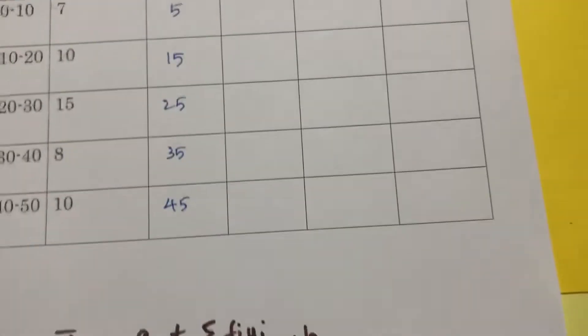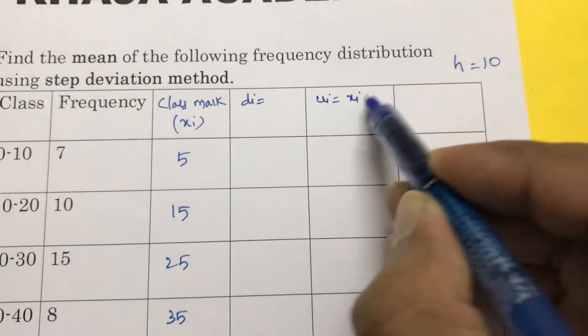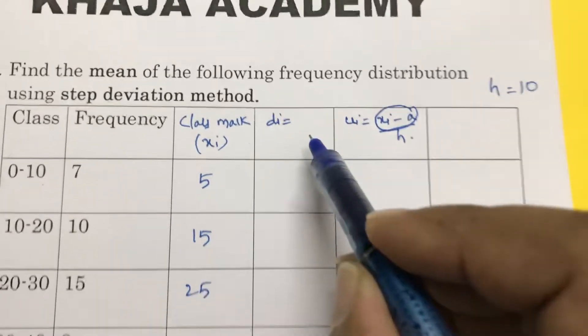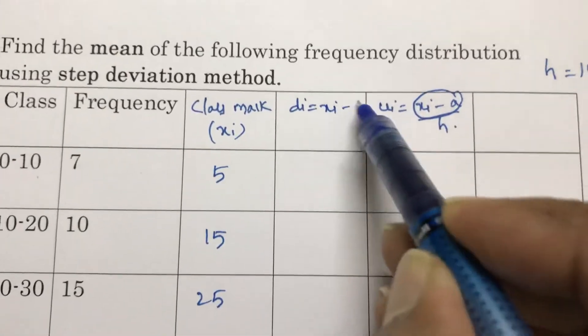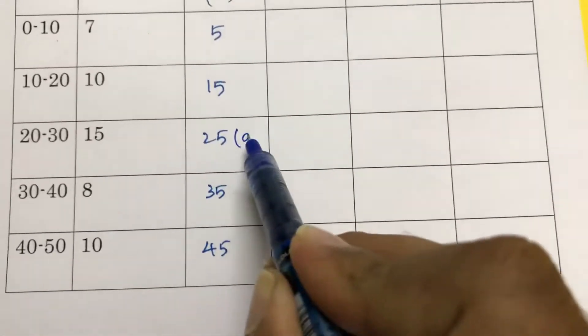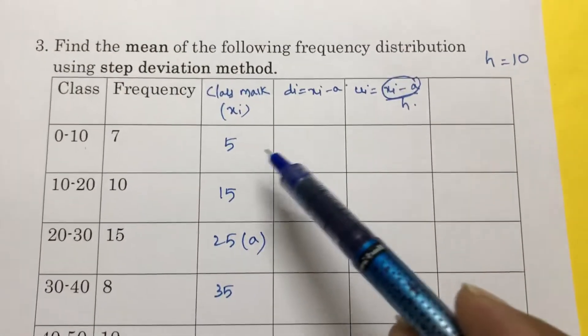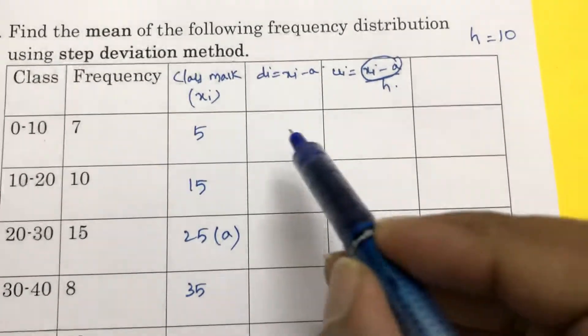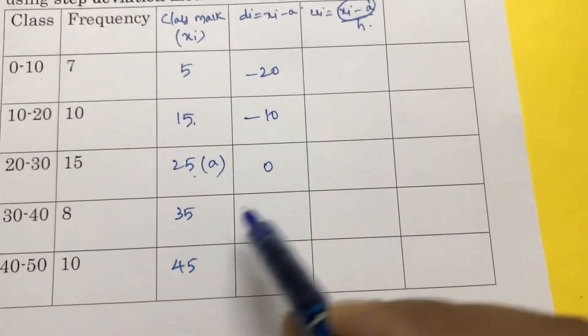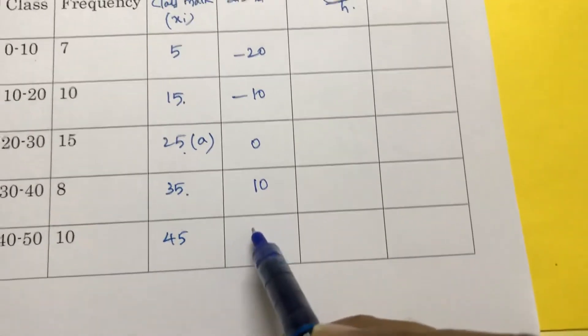We need actually ui. For ui, formula is xi minus a by H, but xi minus a is nothing but di. So if you want, you can calculate di. di is xi minus a. In this class mark, any one value you assume it as a. Here I'll assume it as 25. So di is xi minus a: 5 minus 25, that is minus 20; 15 minus 25, minus 10; 0; 35 minus 25, 10; 45 minus 25, 20.